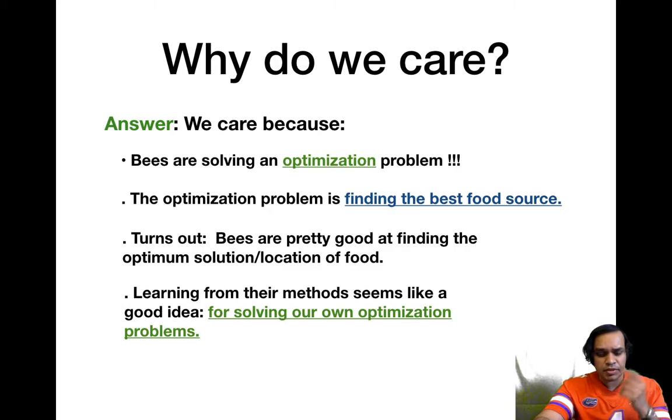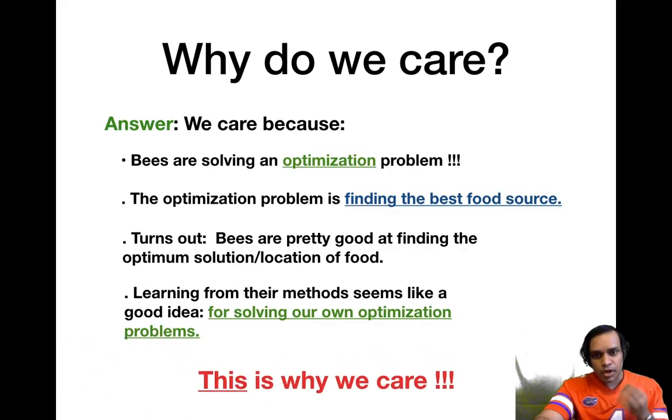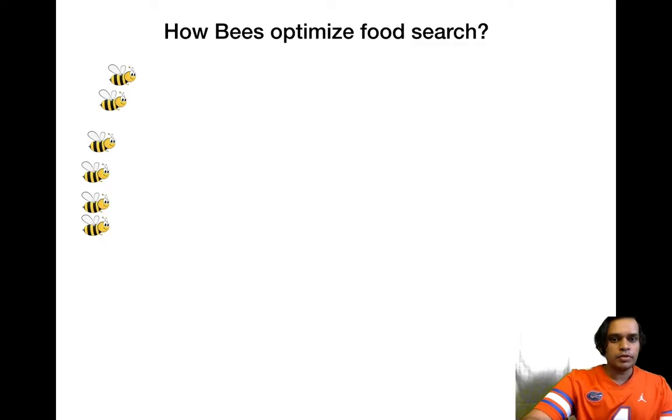So maybe we can learn something from these tiny bees. If we can learn how they solve their optimization of finding the best food sources, maybe we could learn some of their tricks and use that to solve our own optimization problems. This is the reason why we care about this and why we have this algorithm - this is the motivation for it.